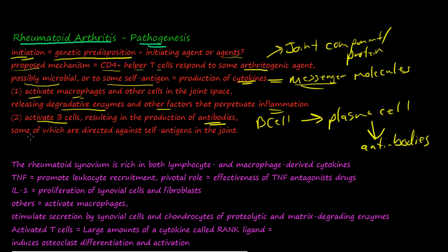These antibodies, some of which are directed against the self-antigen in the joint, some kind of joint component or protein. Once they bind to this arthrogenic agent or some kind of protein that's in the joint, they might actually bind to the joint or embed themselves in the joint.